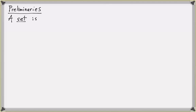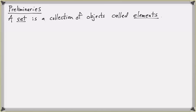Many of these topics can be lumped into the category of elementary number theory and basic concepts about sets. First of all, a set is simply a collection of objects called the elements of the set. The notation we use is lowercase letters for an element — a is an element of set A. Typically capital letters are used for sets. A is a subset of B if every element of A is also an element of B.